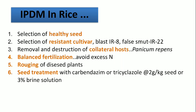The first cultural practice is to select healthy, disease-free seed from a certified source so that disease is not carried forward to the next generation. Next is the selection of resistant cultivars — for example, in the case of blast disease, IR8 is a resistant cultivar, and for false smut, IR22 is the resistant cultivar. Since in many diseases the pathogen survives on the collateral host, remove and destroy the collateral host, for example Panicum repens.